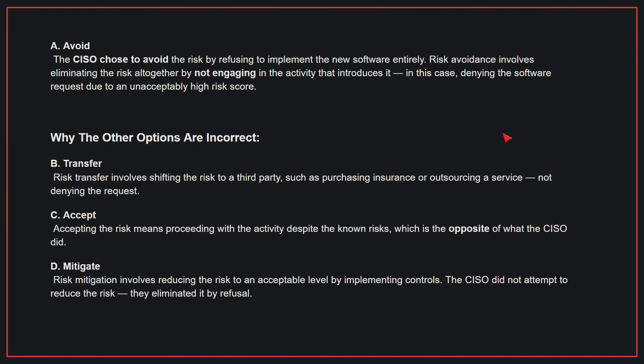Why the other options are incorrect: B. Transfer — risk transfer involves shifting the risk to a third party, such as purchasing insurance or outsourcing a service, not denying the request. C. Accept — accepting the risk means proceeding with the activity despite the known risks, which is the opposite of what the CISO did. D. Mitigate — risk mitigation involves reducing the risk to an acceptable level by implementing controls; the CISO did not attempt to reduce the risk, they eliminated it by refusal.